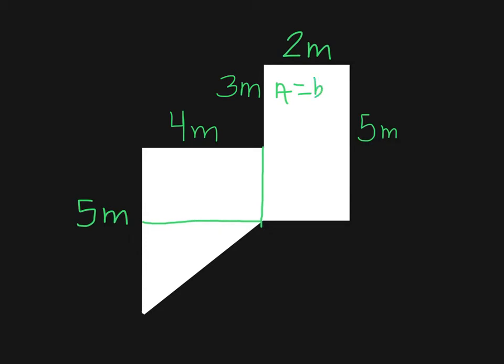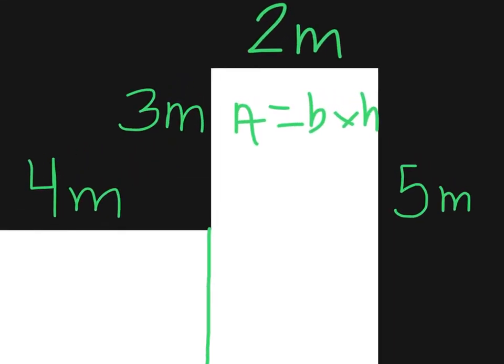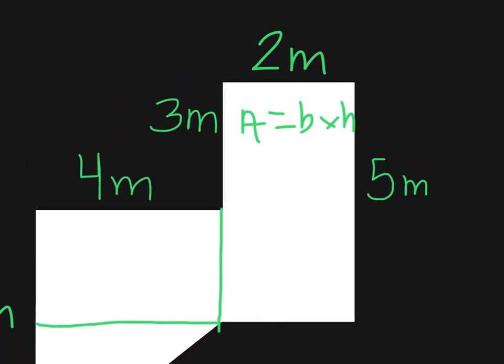We know that area is base times height. So we know the base of our shape is going to be, it's given to us, it's 2 meters. That's this dimension or this side length right there. So we're off to a good start. So we have area is equal to 2 meters.